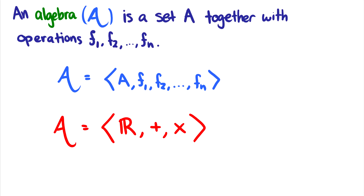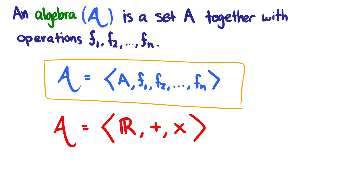An algebra A — which I'll always write cursively — is a set A together with operations f1, f2, all the way up to fn. So we could write the algebra A as the ordered pair or ordered n-tuple (A, f1, f2, ..., fn), and there could be one operation f1 or there could be n operations f1 through fn.